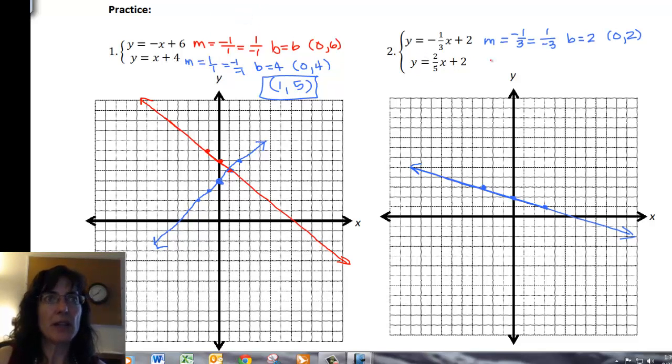And let's look at the next one. So the second line, my slope is two-fifths, and I can also look at that as negative two over negative five, and then my b from the equation is two. That's the same as the previous equation, so I also have a point at zero, two.